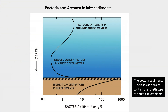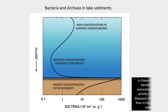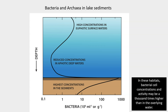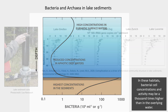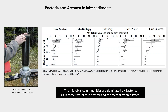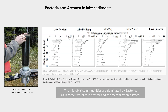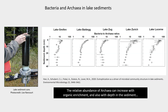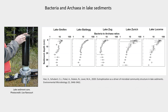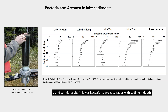The bottom sediments of lakes and rivers contain the fourth type of aquatic microbiome. In these habitats, bacterial cell concentrations and activity may be a thousand times higher than in the overlying water. The microbial communities are dominated by bacteria, as shown in five Swiss lakes of different trophic states. The relative abundance of archaea can increase with organic enrichment and with depth in the sediment, resulting in lower bacteria-to-archaea ratios with sediment depth.